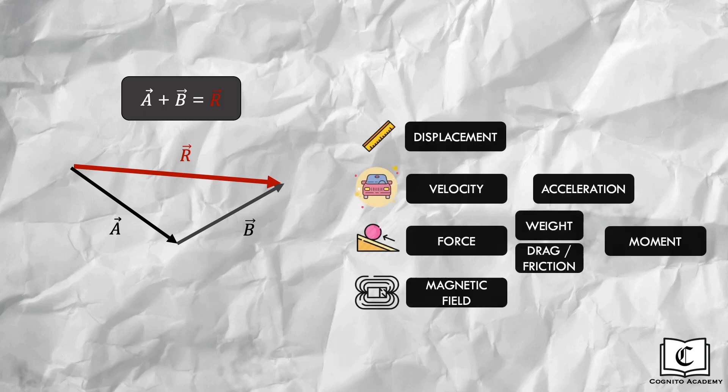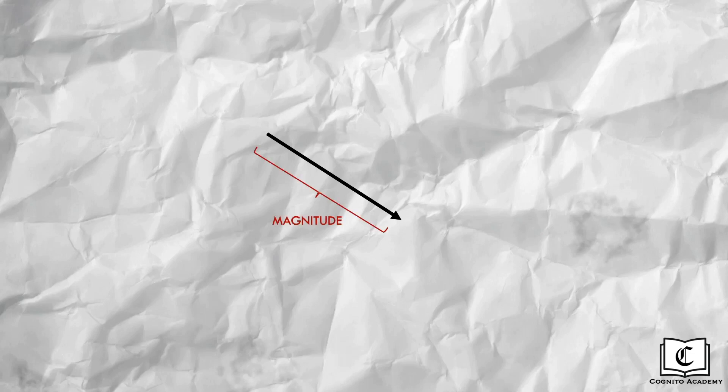Vectors include displacement, velocity, acceleration, and so on, and you can add their individual vectors to get the resultant vector. One thing to note before drawing vector diagrams: when drawing a vector, its length is proportional to its magnitude, so a larger force will have a longer vector arrow, and the direction of the arrow is the direction of the vector.